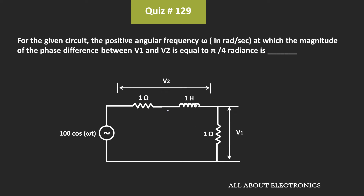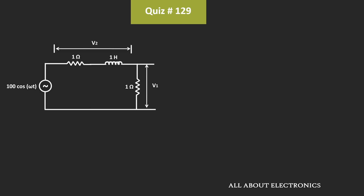In this question, we have been given the circuit, and here we have been given that the magnitude of the phase difference between voltage V1 and V2 is equal to π/4 radians when the angular frequency is equal to ω. We have been asked to find the value of this ω. So first, let's find the expression of the voltages V1 and V2.